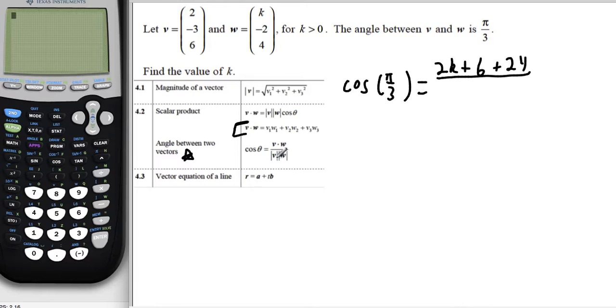And then we are dividing it by the magnitude of v times the magnitude of w. So the magnitude, there's a formula right here. What we do is we square each individual component, add it together, and then take the square root of the whole thing. So for the magnitude of v, we're going to have 2 squared, plus negative 3 squared, plus 6 squared, the square root of all that.